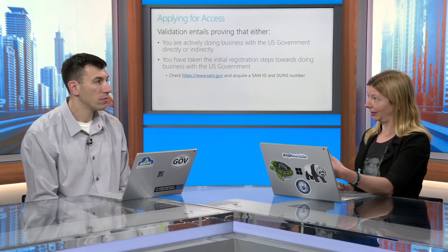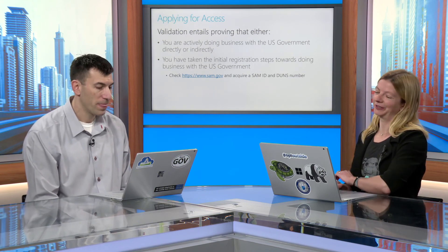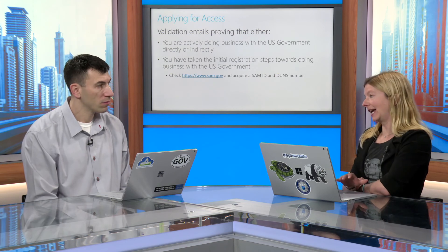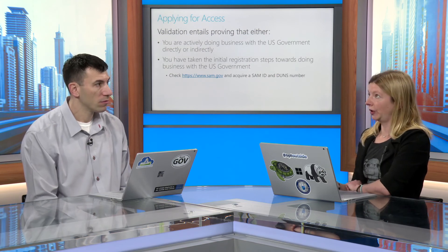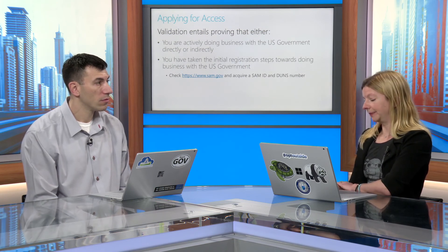You don't have to prove that you have existing government customers, because otherwise you'd have a chicken-and-egg problem — where you had to be registered but you didn't have customers yet until you get registered. So just by filling this out, as long as your company has a US-based address through one of your offices — it doesn't have to be all of them, but you have to have a US-based office — you shouldn't have any problems with registering for SAM.